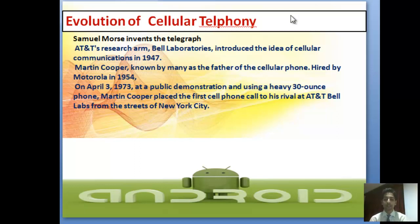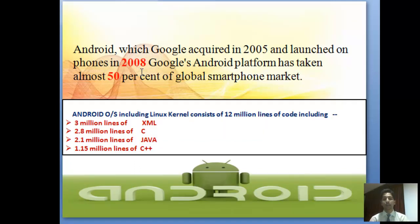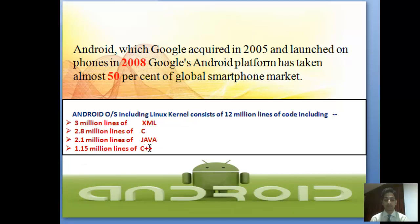Android, which Google acquired in 2005 and launched on phones in 2008, has taken almost 50 percent of global smartphone markets. It includes 12 million lines of code, 3 million lines of XML, 2.8 million lines of C, 2.1 million lines of Java, and 1.5 million lines of C++.